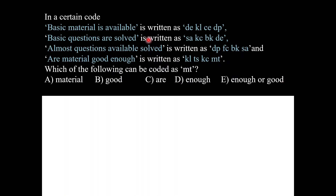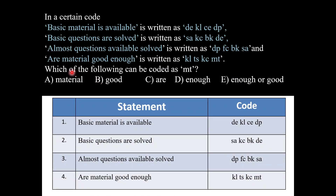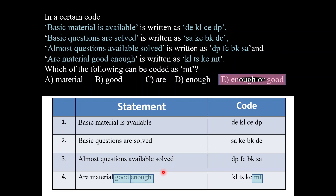The next question uses the same four statements. Drawing the table quickly — we have to find which word can be coded as MT. The code MT appears in statement 4 only, so the word for MT will be in statement 4. R is present in statement 2 also; material is in statement 1 also. Good is not present in the above three statements, and enough is also not present in the above three statements. So the word for MT can be either good or enough — answer option E.